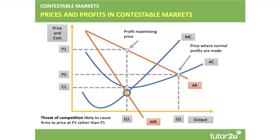Contestable markets — a very important hot topic. Typically you use a downward sloping average and marginal revenue curve, very similar to a monopoly diagram. Q1 is the profit maximizing output at price P1, generating a hefty profit. But with the threat of hit and run competition, the firm may choose to price below P1 — perhaps as close as P2 where they maximize sales and make only normal profit, reducing the risk of new competition entering. If the threat of competition is high they'll tend to price at P2 with bigger output Q2.